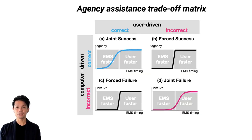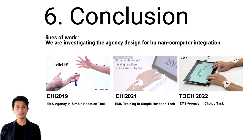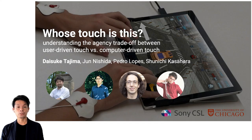Taken together, we construct agency assistance trade-off matrix, which can be used for designing human-computer integration touch. From the lines of our work, we have been investigating the sense of agency design for human-computer integration touch. So, thank you for listening to our talk and happy to discuss with you.